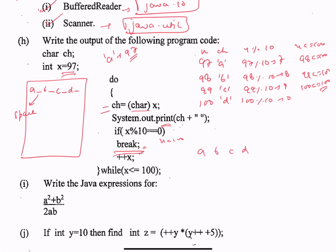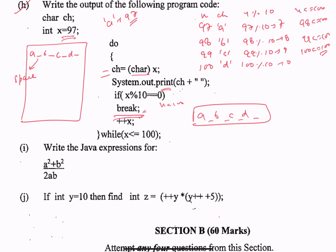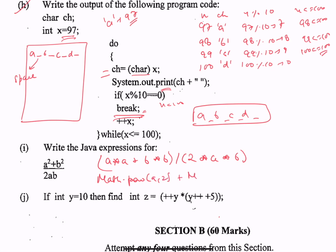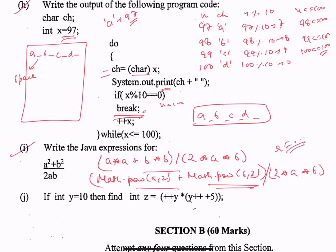So the output is: a space b space c space d space — these are four characters each followed by a space. Part h is done. Part i: write the Java expression for (a² + b²) / (2ab). You can write: (Math.pow(a, 2) + Math.pow(b, 2)) / (2 * a * b). You just have to write the expression; you can assign it to a double value but that would make it a statement.